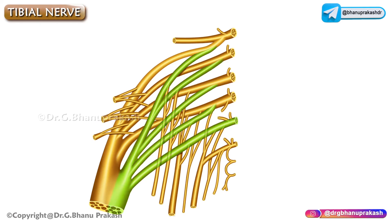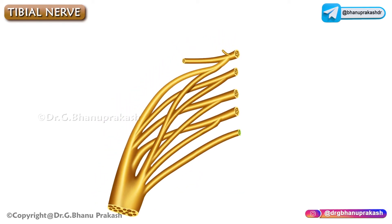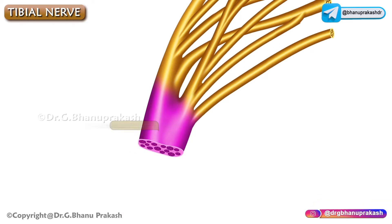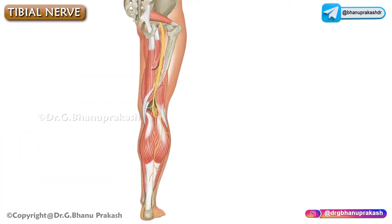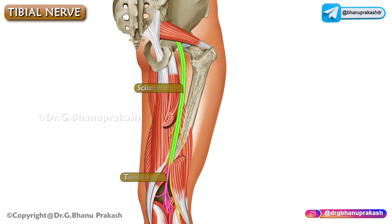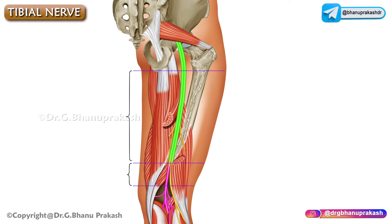The tibial nerve is derived from ventral divisions of ventral rami of L4 to S3 spinal nerves. It is a component of the sciatic nerve and arises as a terminal branch of the sciatic nerve on the back of the thigh, at the junction between the upper two-thirds and lower one-third of the thigh.